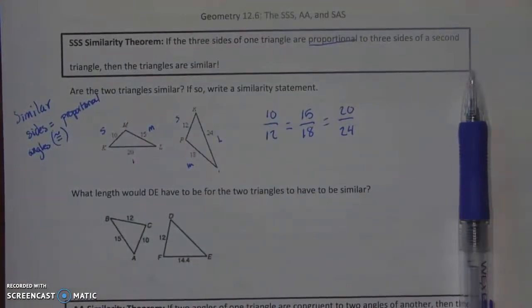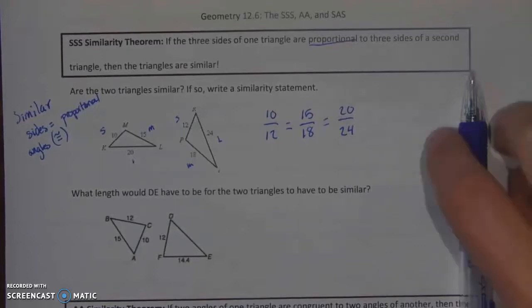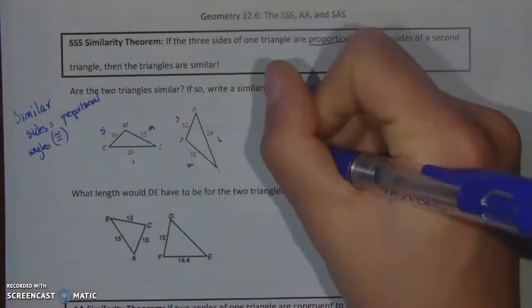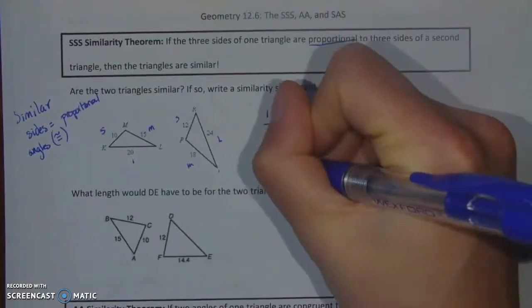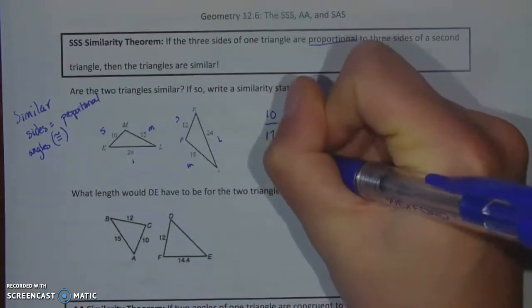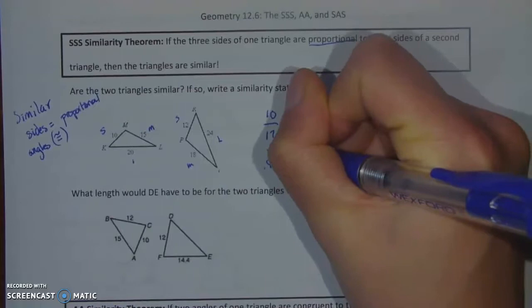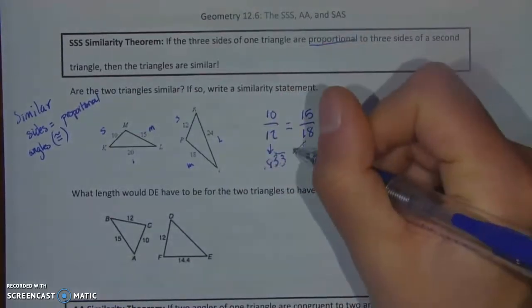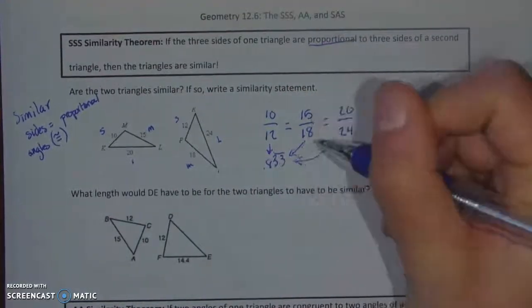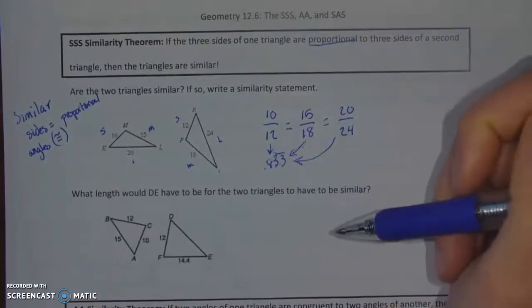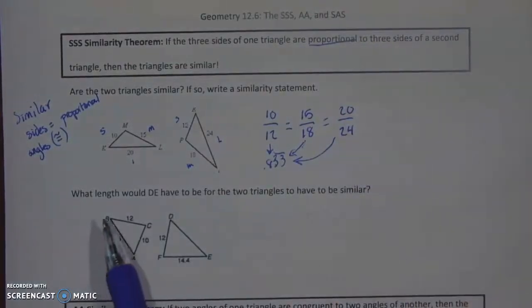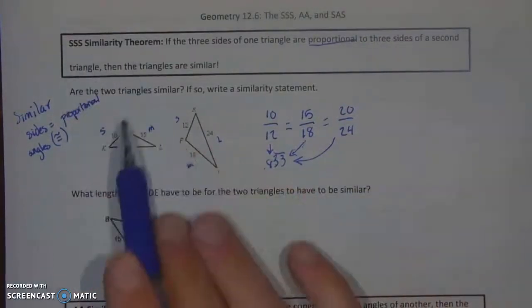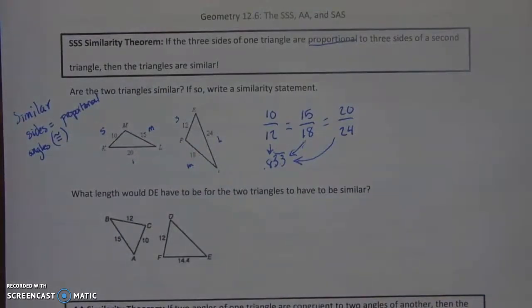Go ahead and put those numbers in. Now if you put those numbers in, you should see that each one of these gives you a decimal value of 0.83 repeating. And so that means that all of these proportions are equal. If even one of them had not been, it would not have fit the SSS similarity theorem. In fact, it would have worked as a counterproof and these triangles would not have been similar. But they are, so we can write a similarity statement.